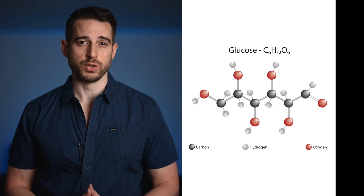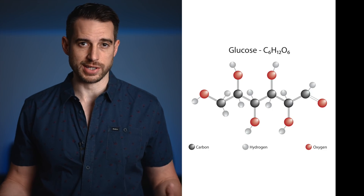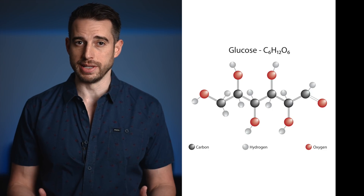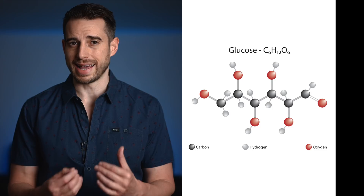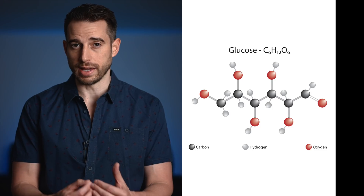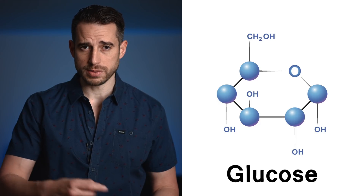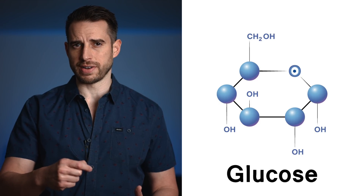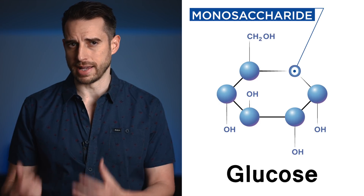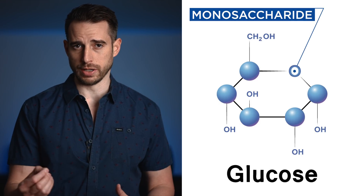This is a molecule called glucose. It's a carbohydrate, meaning it's a string of carbon that is hydrated with hydrogen and oxygen. When it forms a ring-like structure, it's classified as a monosaccharide, meaning one sugar.